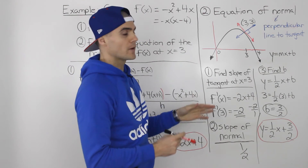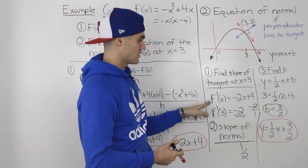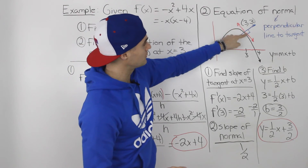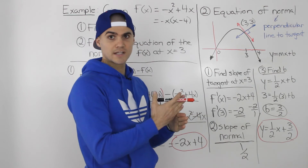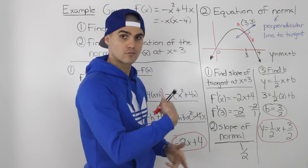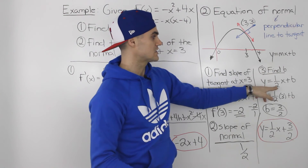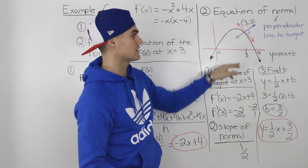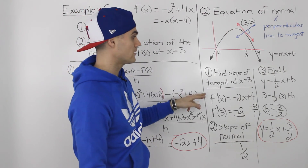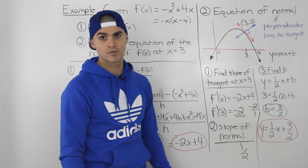As a quick recap, to find the equation of a normal there are three steps. First, find the slope of the tangent at the given x value using the derivative — plug in 3 to get -2. Second, find the slope of the normal as the negative reciprocal of the tangent slope: -2 becomes 1/2. Third, use that slope and a coordinate from the function (x = 3, y = 3) to solve for b in y = mx + b, giving b = 3/2 and final equation y = (1/2)x + 3/2.